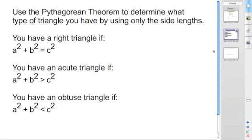You can use the Pythagorean theorem to determine what type of triangle you have by using the side lengths. If a² + b² = c², you have a right triangle. If a² + b² > c², you have an acute triangle. If a² + b² < c², you have an obtuse triangle. Pause the video and write this down in your notes.